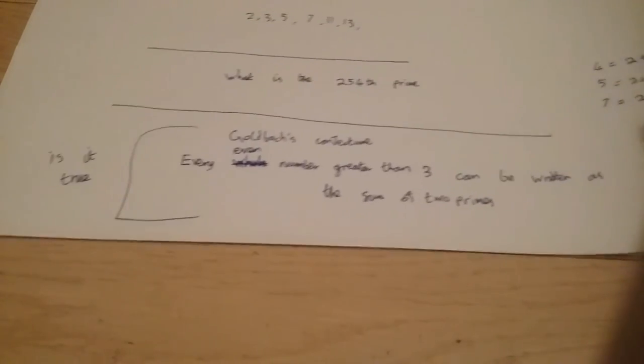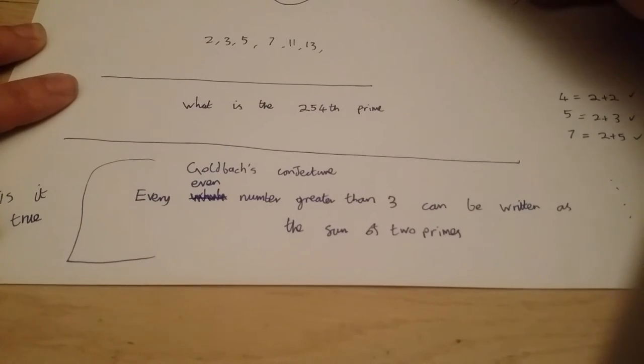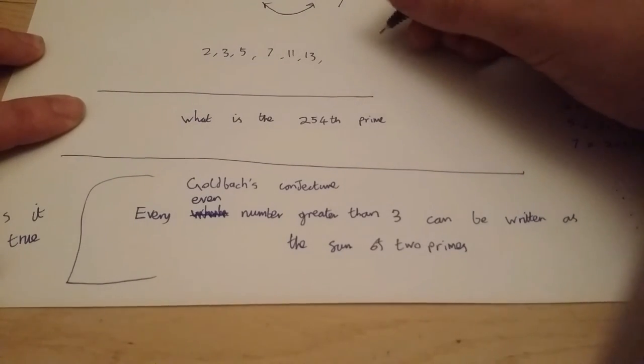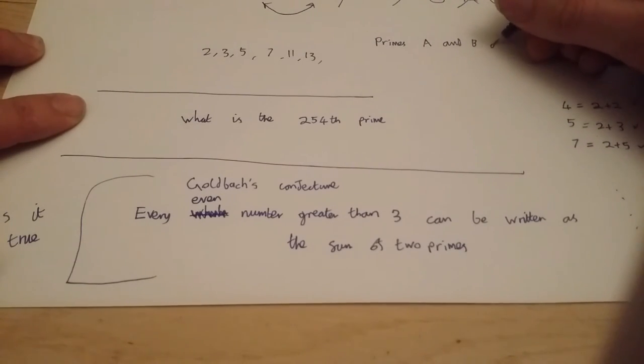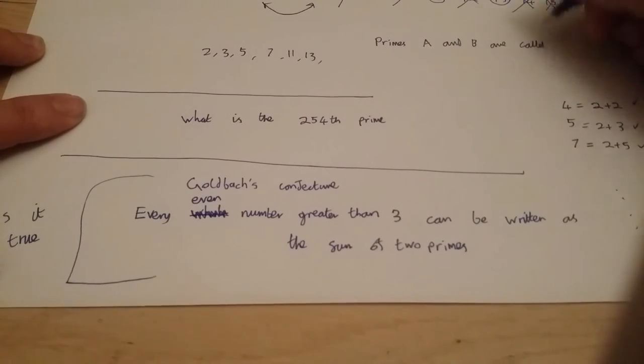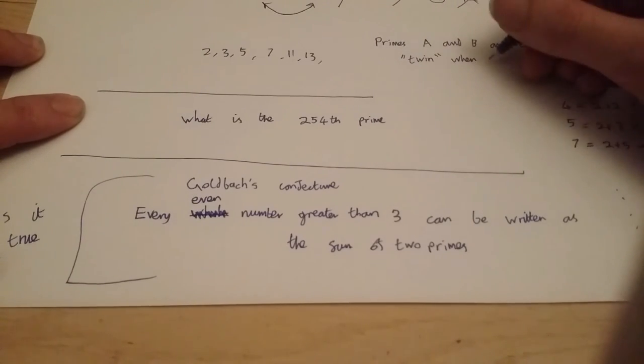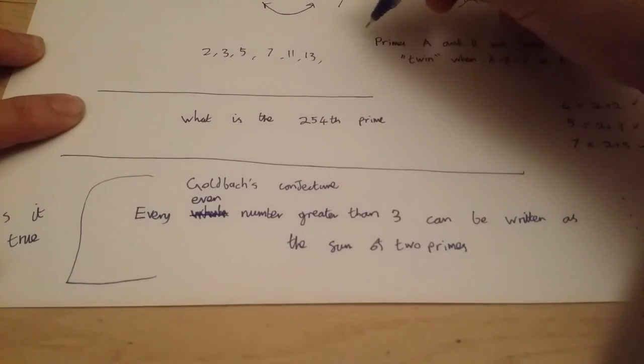Another famous problem has to do with twin primes. So, here are some twin primes. Five and seven. Here's another pair of twin primes. Eleven and thirteen. So, primes a and b are called twin primes when either a minus b equals two or b minus a equals two. That's the definition.